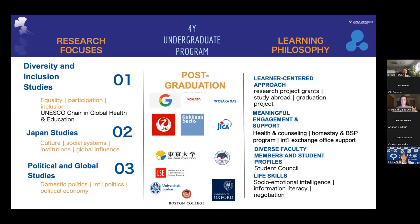The second research focus is Japan studies, which offers Japan as a case study — studying Japan from the point of view of culture, institutions, and society, as well as Japan's foreign policy and influence within the larger international order. The third focus is political and global studies, where we study more broadly: international politics, domestic politics, political economy — it's much more comprehensive.